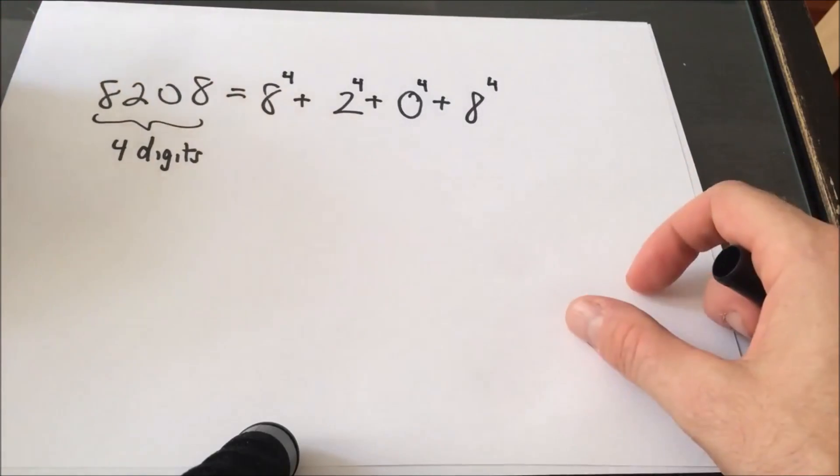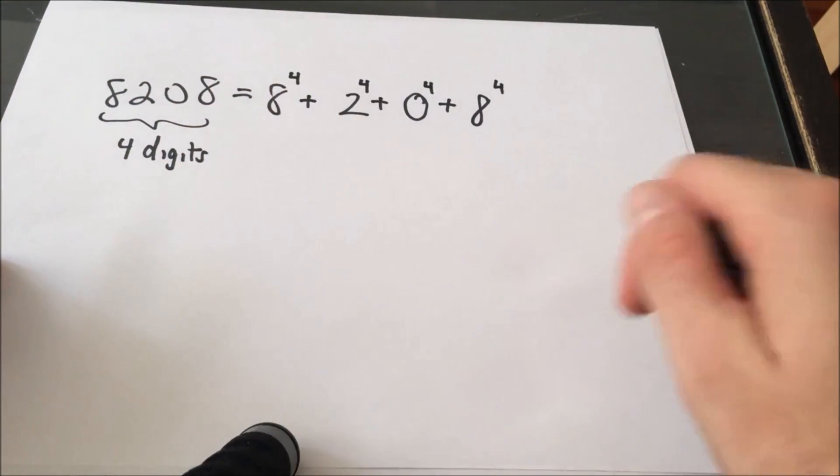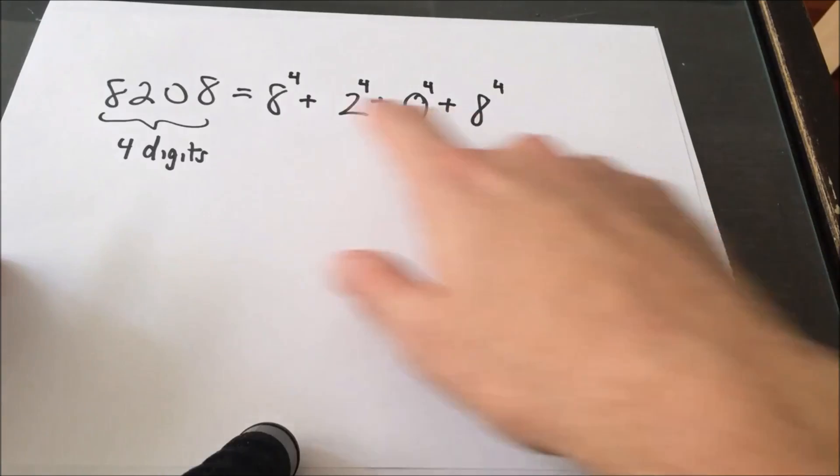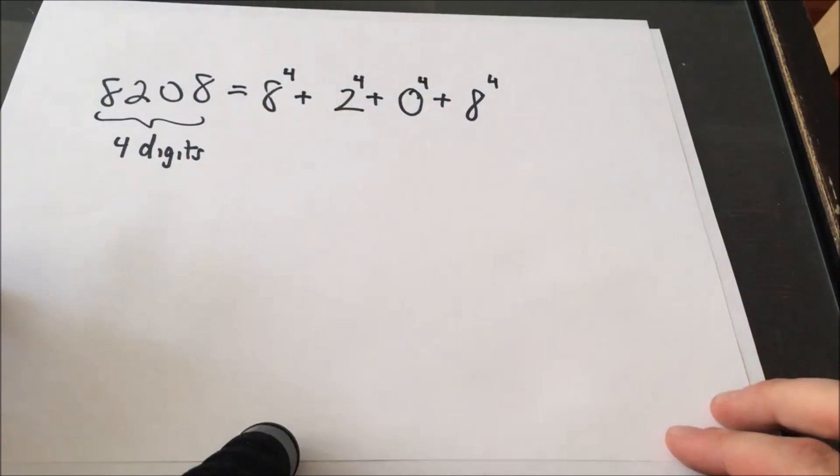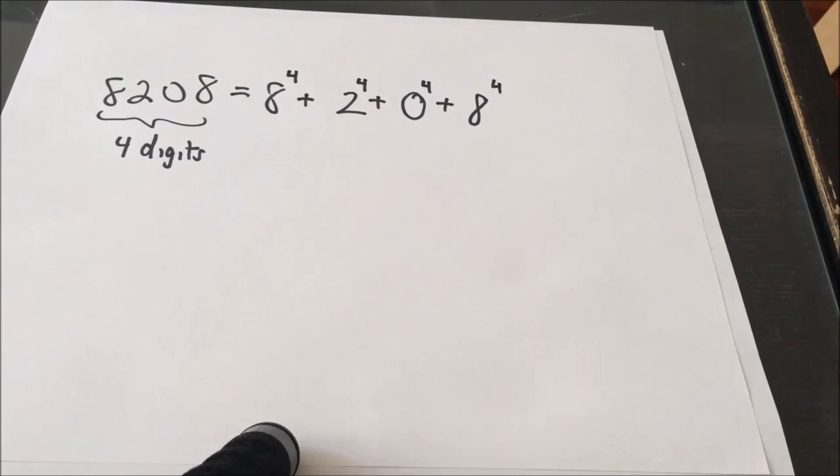So I think this is kind of the terminology behind them being called narcissistic. The number is just so in love with itself, it's using its own digits to produce itself. So very narcissistic indeed.